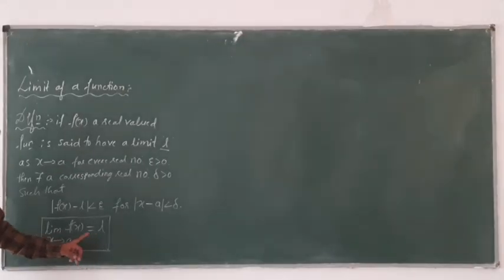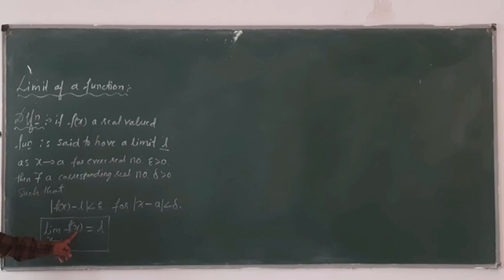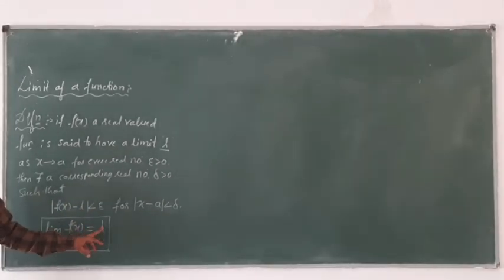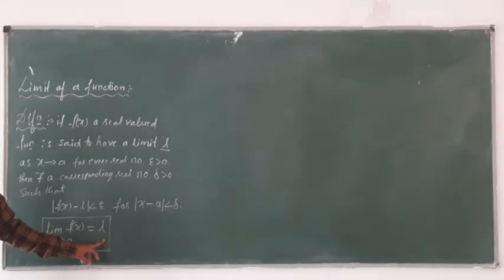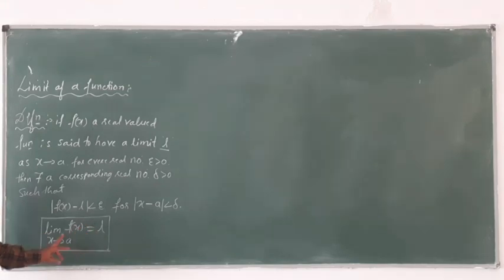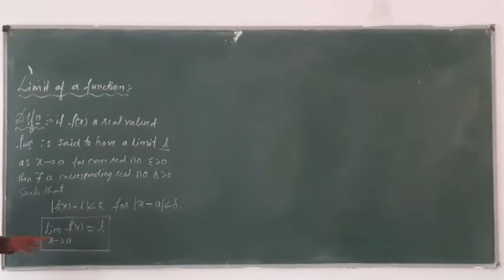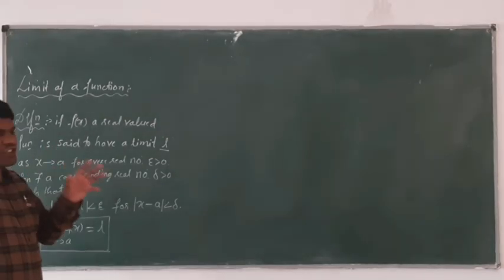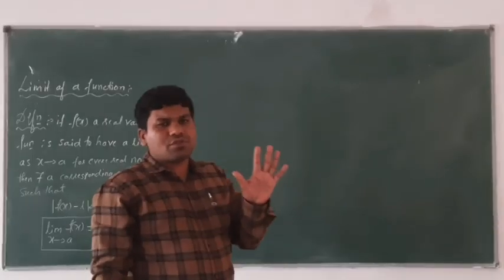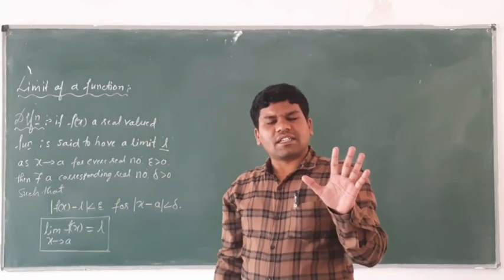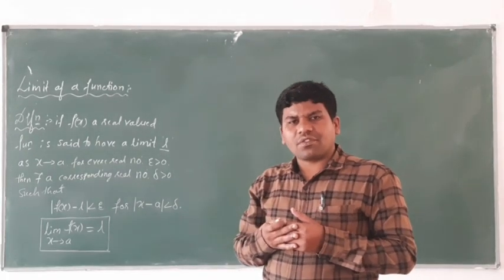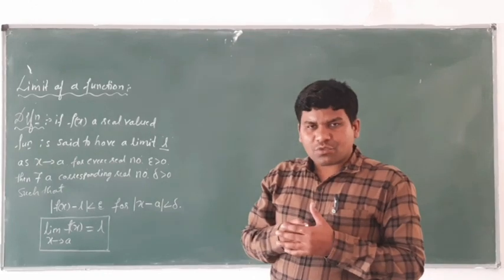If you put X equal to a, then there is some value you will get — one real number — that is L. This L is the limit when X tends to a of the function F of X. But this is just a definition. How do you represent the limiting distance of the function in the graph? What is the graphical representation of the limit of the function? That is the most important.